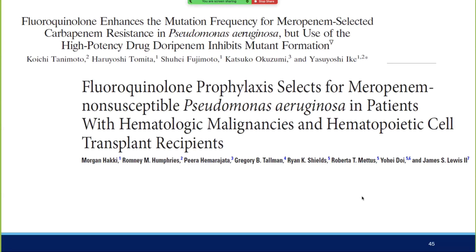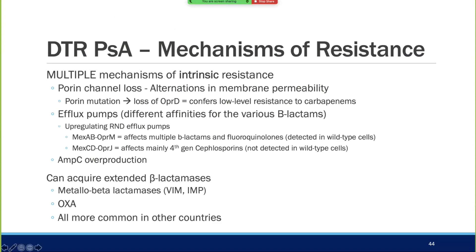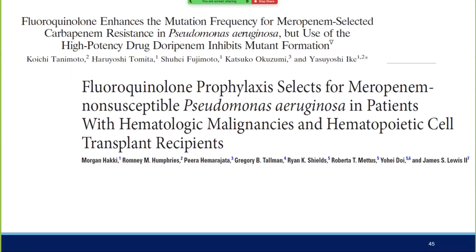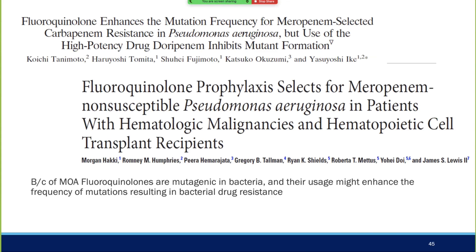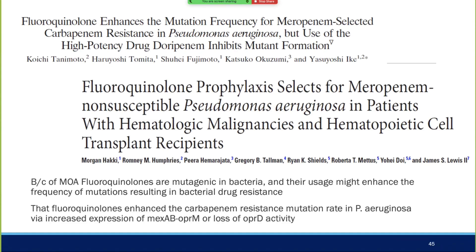MexAB-OprM selects for meropenem-nonsusceptible Pseudomonas. They've moved away from the term 'carbapenem-resistant Pseudomonas' because carbapenem-resistant implies pan-resistance to beta-lactams, versus selective inhibition of one antibiotic. Fluoroquinolones, through their mutation-enhancing mechanism, cause bacterial drug resistance and enhance the carbapenem-resistant mutation rate in Pseudomonas via OprM or porin loss. Don't be surprised if you encounter Pseudomonas that is strictly meropenem-resistant and sensitive to all other beta-lactams due to previous fluoroquinolone exposure.